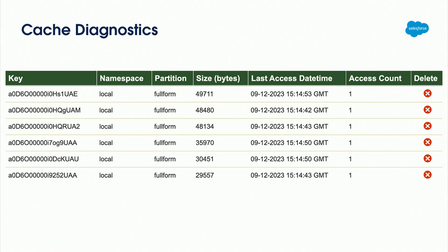In the UI once you scroll down, you get a breakdown of what's currently in your cache on a record-by-record basis. The cache works as a key-value pair — like an Apex map — and you access each record by its key. You can see the specific records added to the cache, the namespace they exist in (local or package namespace), the size as it exists in the cache, the last time it was accessed, and the access count.